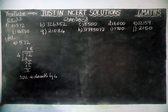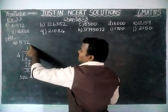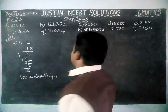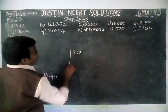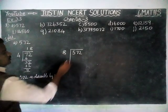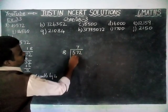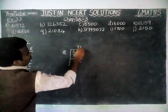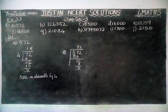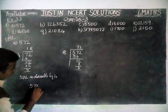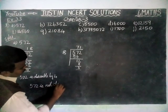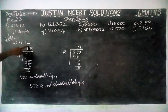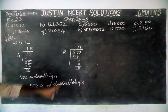Next we are going to check divisibility by 8. If the last 3 digits are divisible by 8, that number is divisible by 8. Here we have only 3 digits, so we divide 572 by 8. In 57, 8 sevens are 56, remaining 1, bringing down 2 gives 12. In 12, 1 eight is 8, remaining 4. Since remainder is 4, 572 is not divisible by 8. So 572 is divisible by 4 but not divisible by 8.